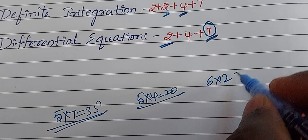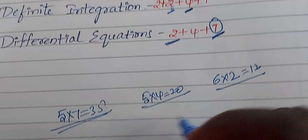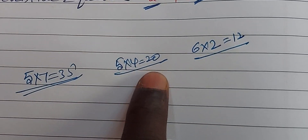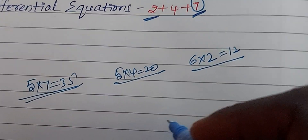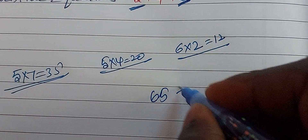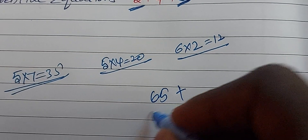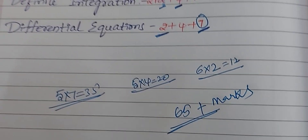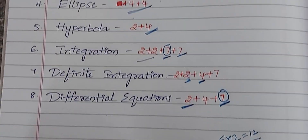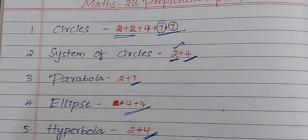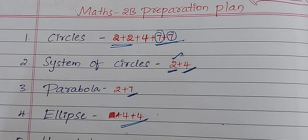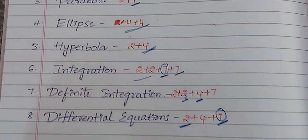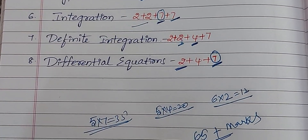Suppose if it is six, that's 6 × 2 = 12 marks. So mark on the middle: 35 + 20 = 55, plus 12 = 67 marks. Overall, 65 plus marks is what you need. Friends, follow this pattern and most of you will pass. All the best!